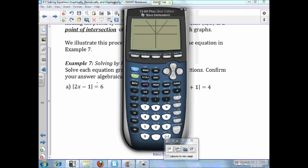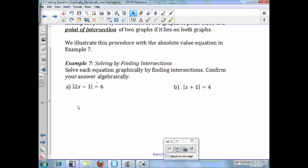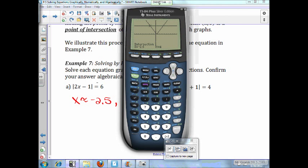So, there's what we have. We want to find our intersection. So, second trace. You want to go down to 5, which is intersect. You want to put your cursor close to where you think the intersection point is. And press enter, enter, enter. Your intersection is negative 2 and a half and 6. So, x is about negative 2 and a half. There's one answer. Your second answer is at 3 and a half.